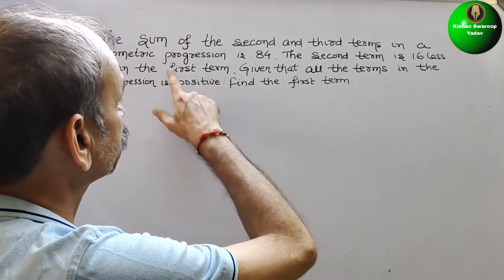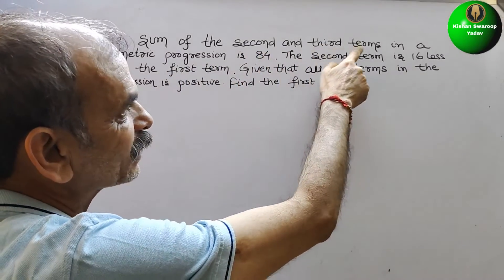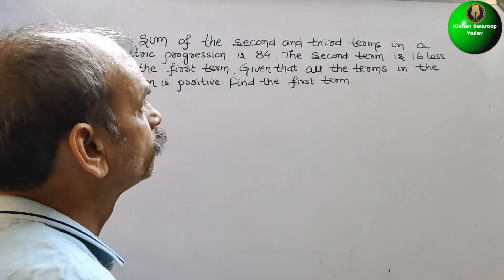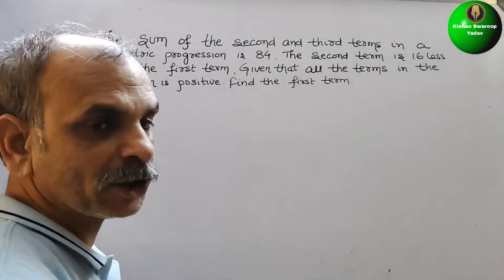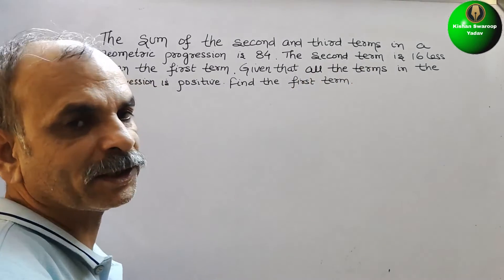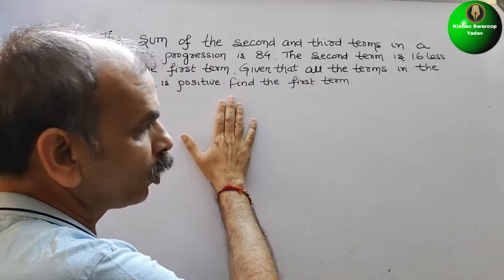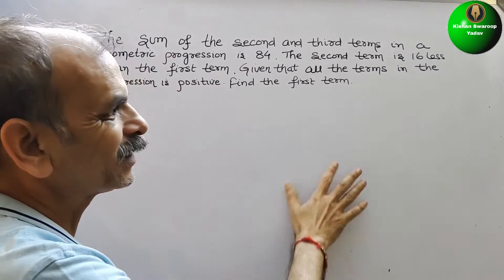Your question is: the sum of the second and the third term in a geometric progression is 84. The second term is 16 less than first term. Given that all the terms in the progression is positive, find the first term.